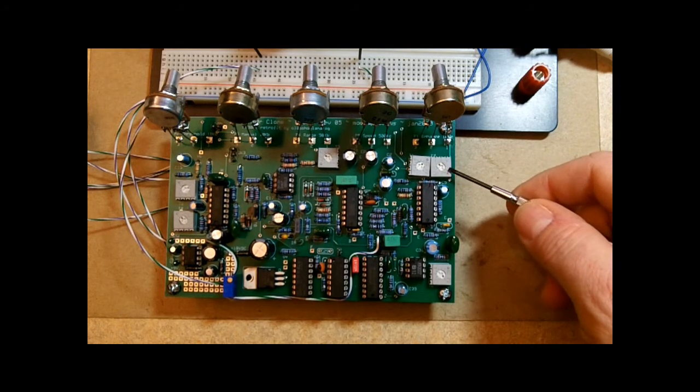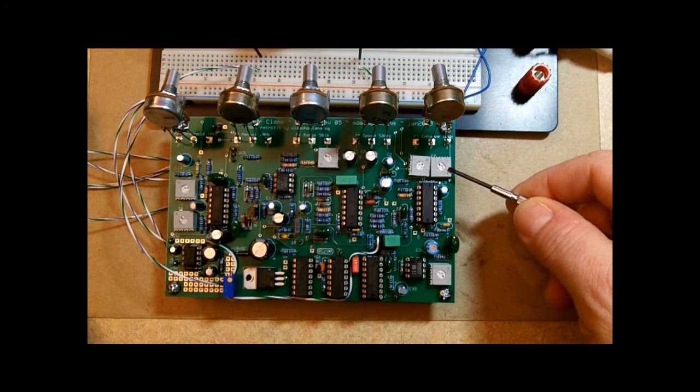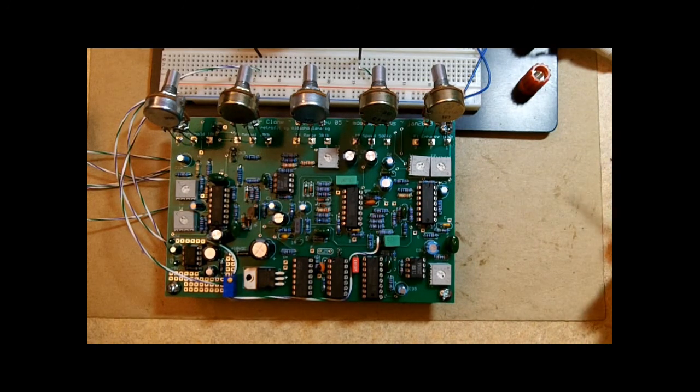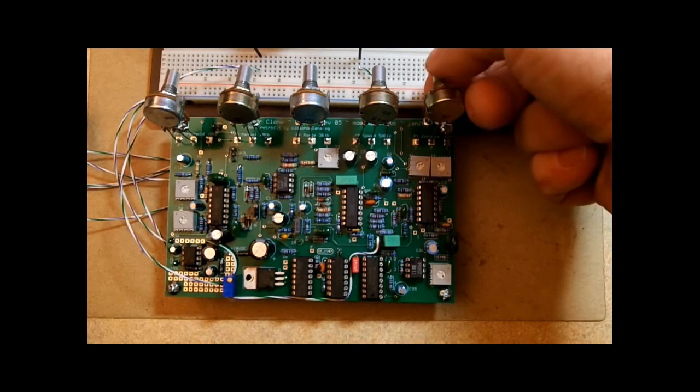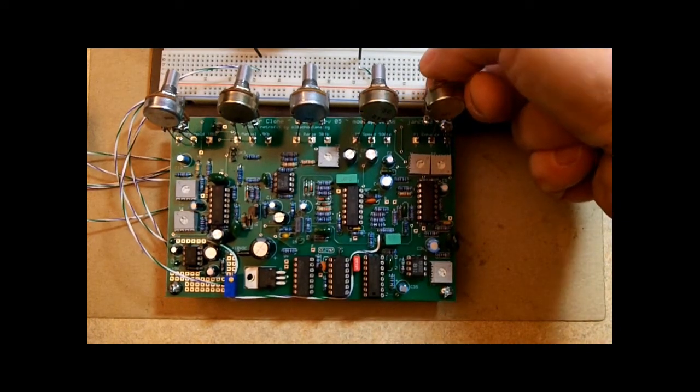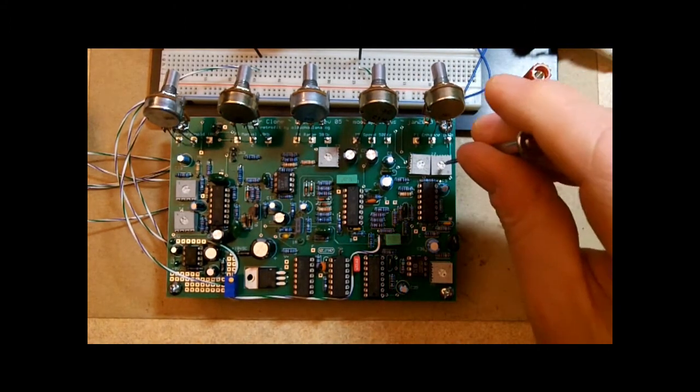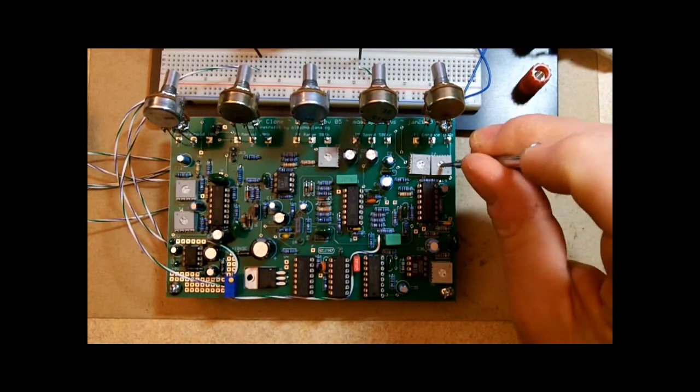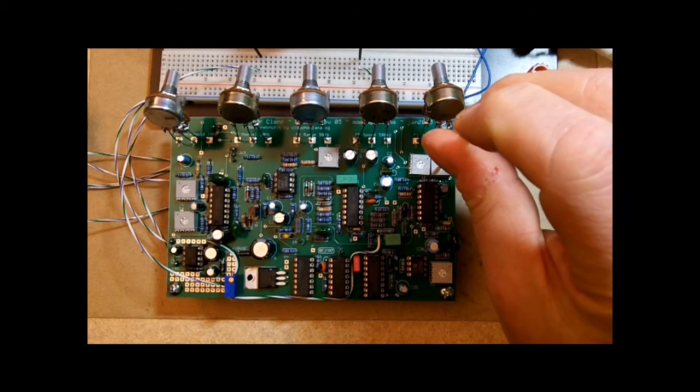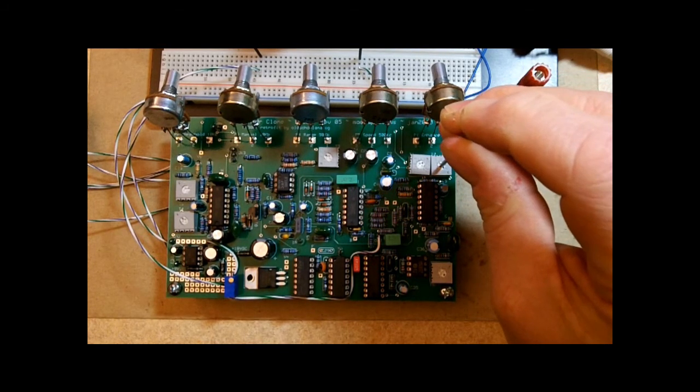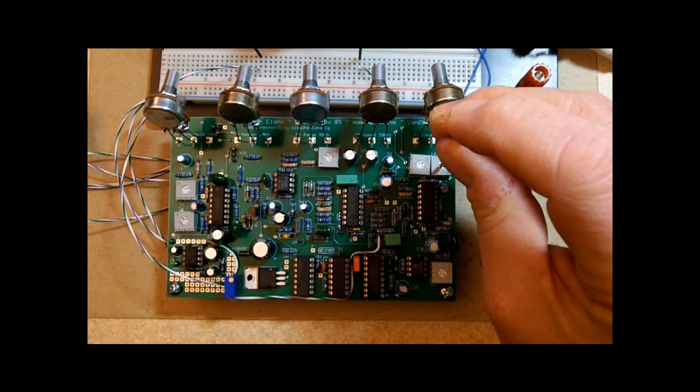Now the last thing to adjust here, well not really the last, but is the enhanced trim pot. And this will set the maximum amount of regeneration that you'll hear. We want to do this again with the enhanced pot at 100%, fully up, and turn T2, the enhanced trim, counterclockwise to increase the amount of regeneration. And again, be careful. You can get some loud volume spikes.